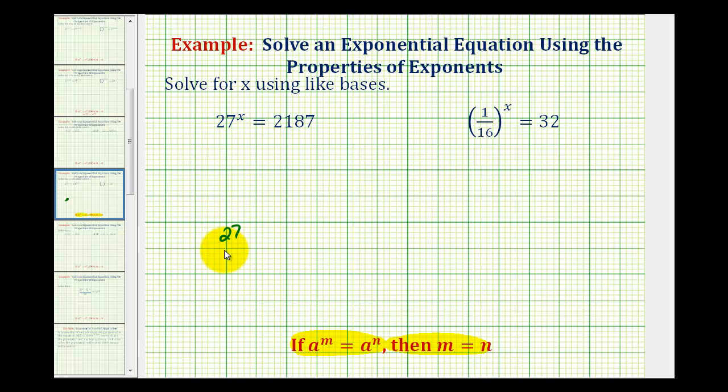So 27 is equal to 9 times 3 and 9 is equal to 3 times 3. So 27 is equal to 3 factors of 3, which means we can write the left side of the equation as 3 to the third raised to the power of x equals...